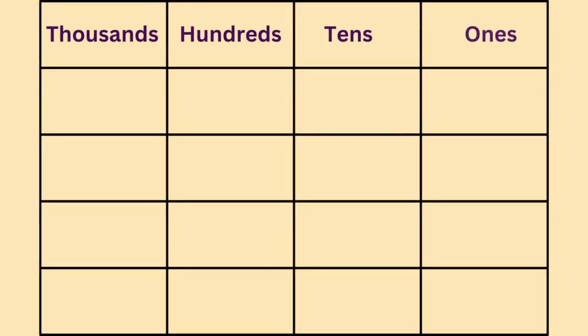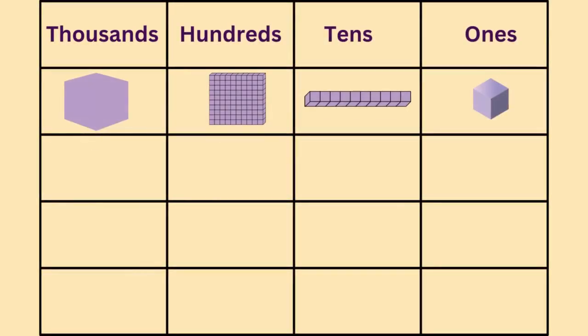I'll draw a table here to help us out. In the 1000s column, we'll place the cube. Each cube represents 1,000. In the 100s column, we'll use the flat, which represents 100. And in the 10s and 1s column, we'll use the long and the unit cube. The long represents 10 and the unit cube represents 1.